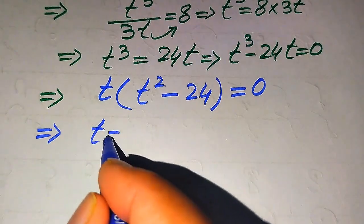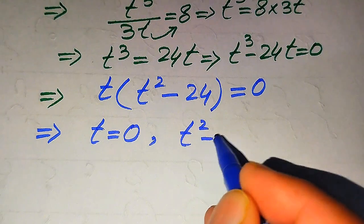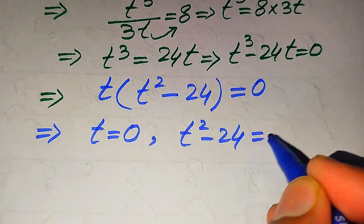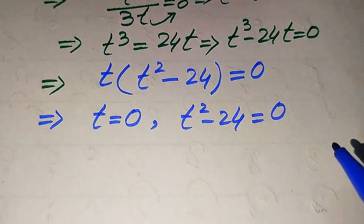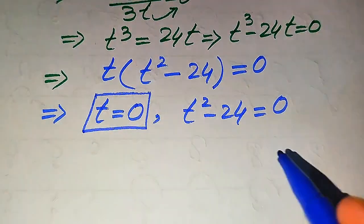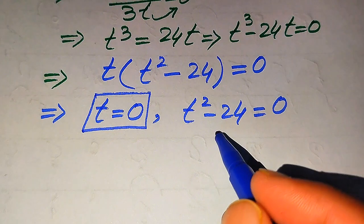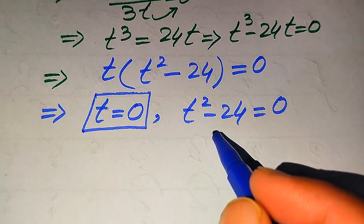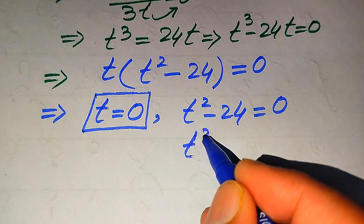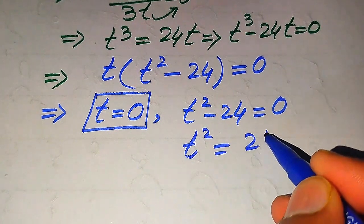We divide this equation into two cases. The first case is t equals zero, and the second case is t squared minus 24 equals zero. The first case gives us our first root. To find the other roots we solve t squared minus 24 equals zero by moving minus 24 to the right hand side, giving t squared equals 24.